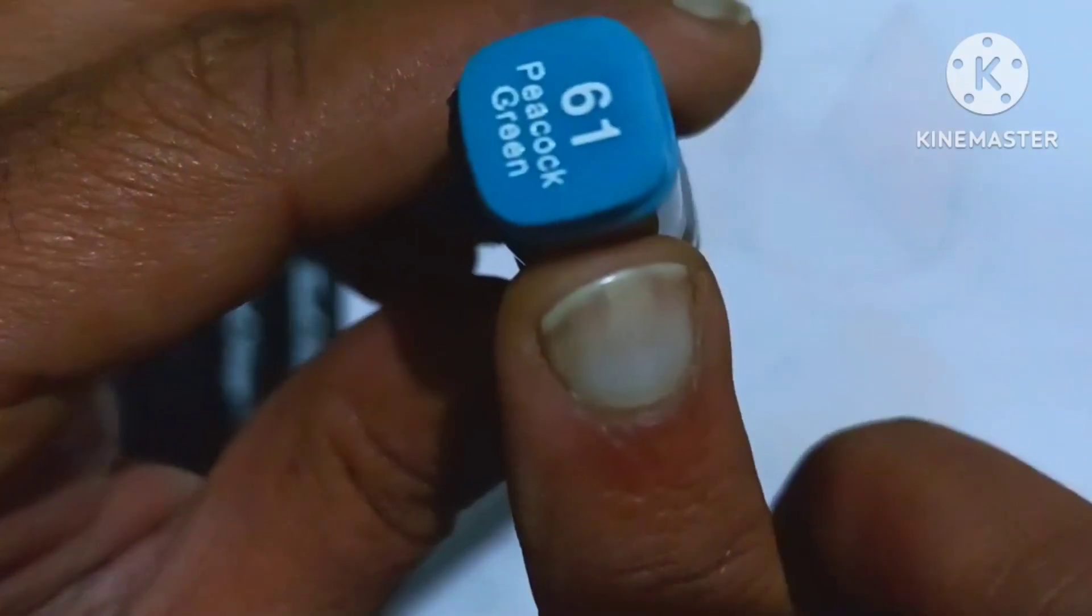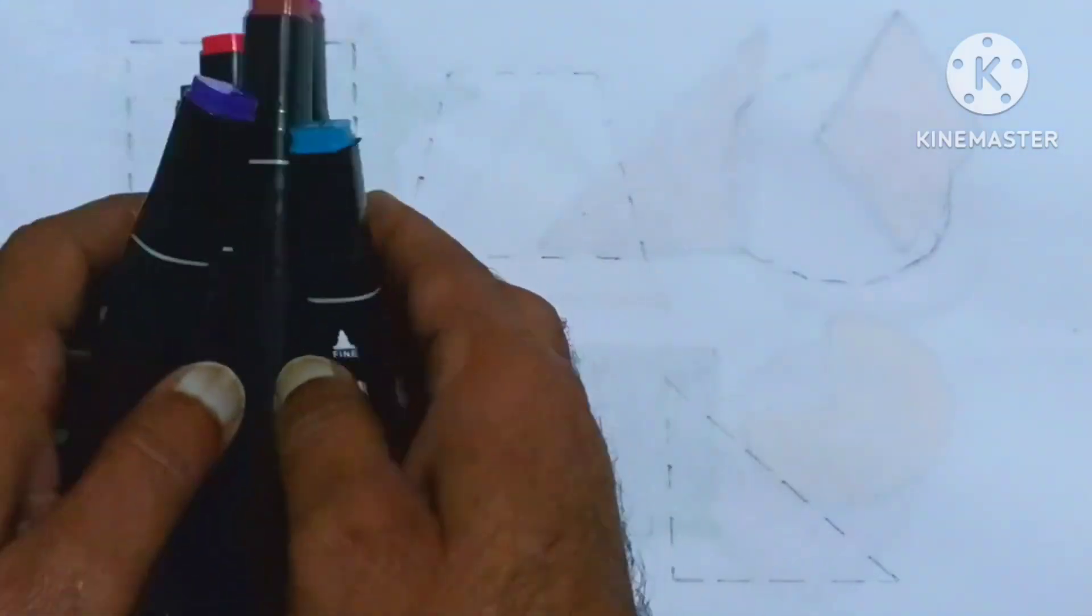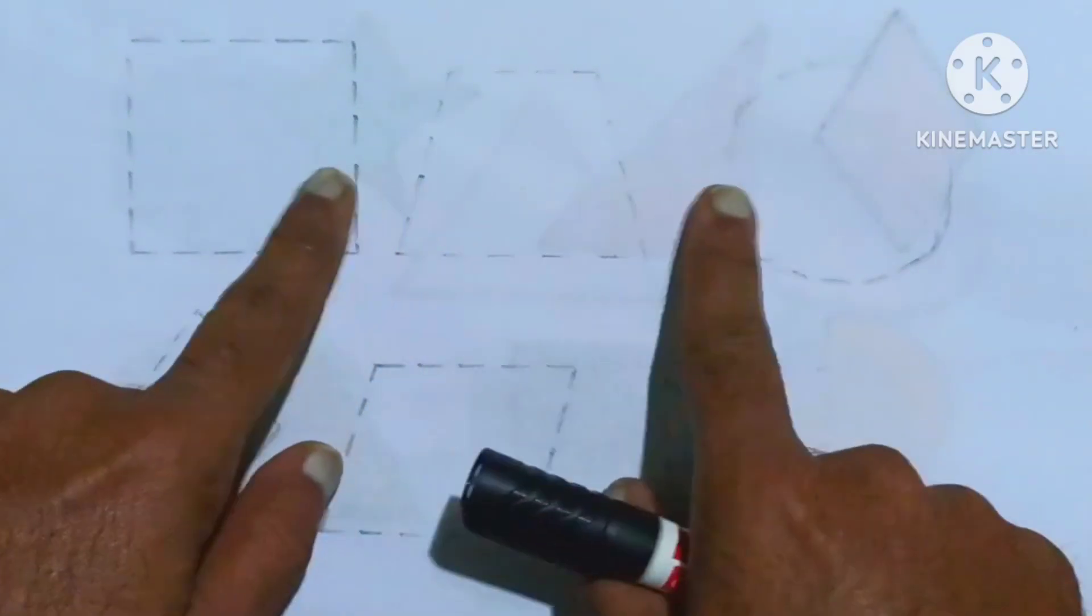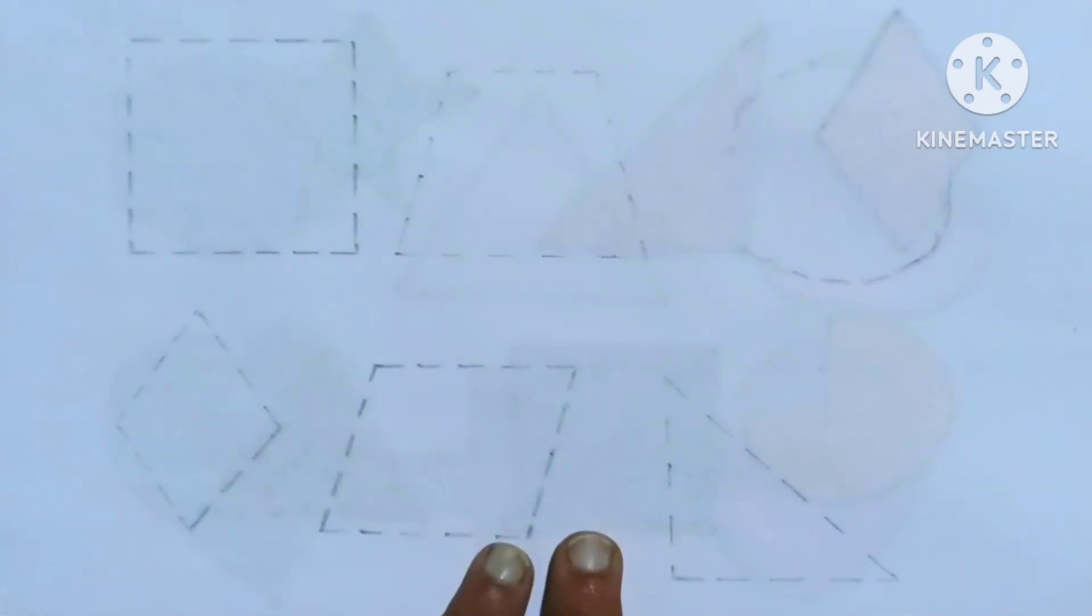So look at this. Now we draw the shapes. Look at these all set 2D shapes, kids.